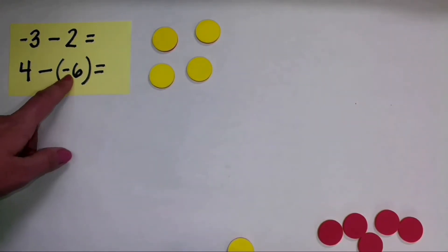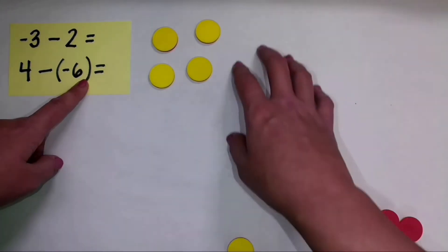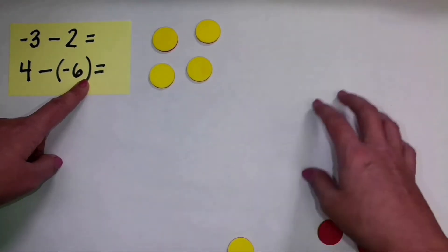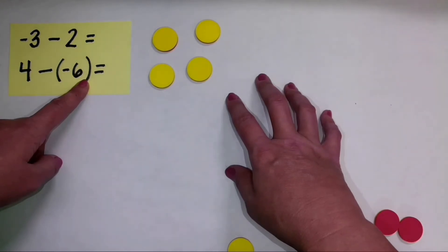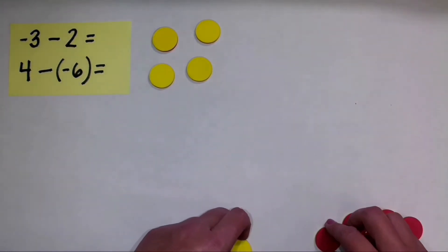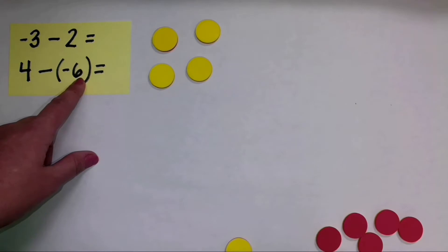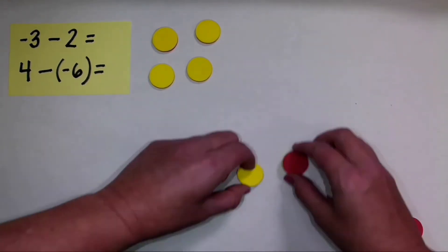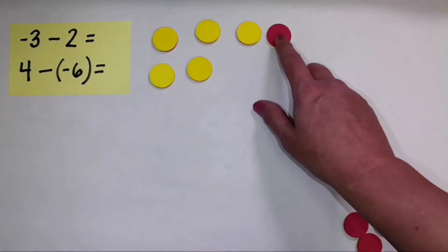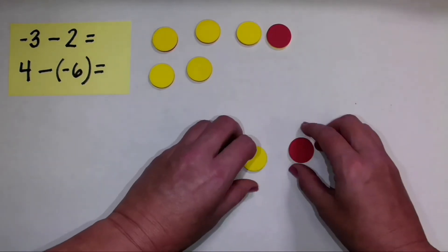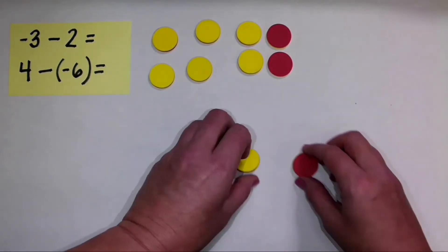Now I need to subtract negative six. But I don't have any negative counters to subtract. There are no red counters out here right now. So we will use zero pairs to get to the point where we have negative six to subtract. So I'll bring in one zero pair. Don't have negative six to subtract. Another. Another.